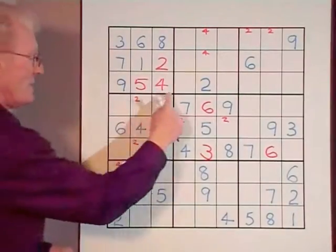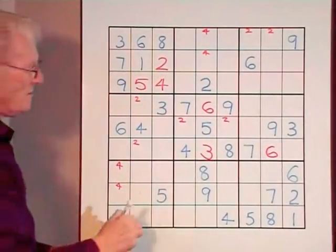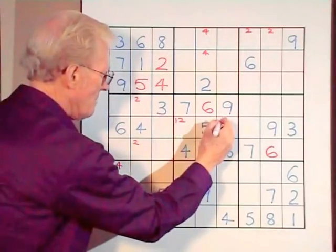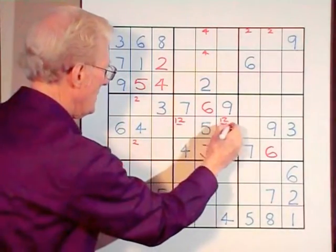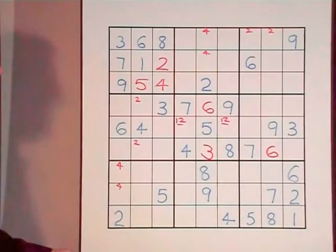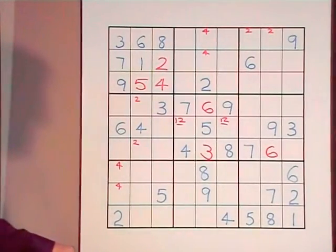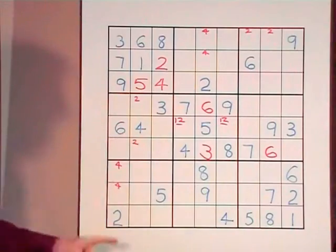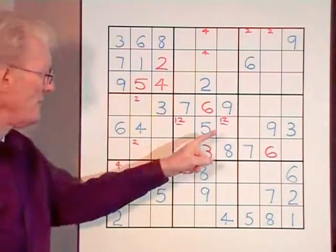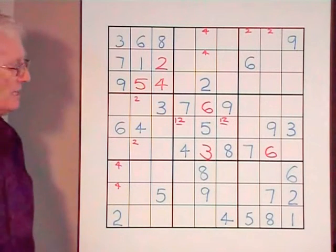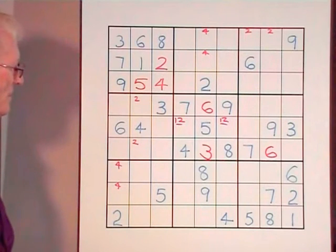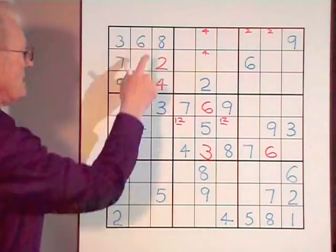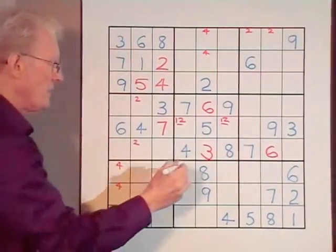Now we look back at this same block in the middle — there's only one number missing and it's a one. That becomes a matching pair, and I check to see if there's anything that will happen — no, nothing, so we leave it like that, knowing no other numbers can go in there. When I look at that row, I can see a cell empty here and a cell empty here — two empty cells equals a matching pair. The numbers are a seven and an eight. We look at this cell and look up — it's a seven, because there's an eight above. Therefore this becomes an eight.